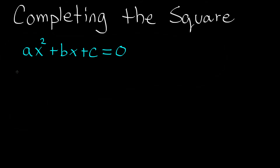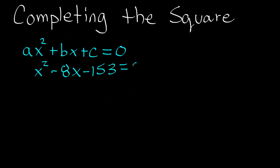For our example, the quadratic equation we are going to look at is x squared minus 8x minus 153, and we are setting that equal to zero.